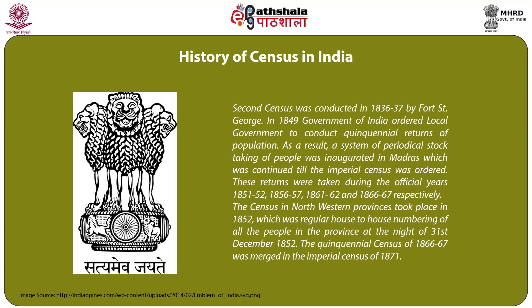In 1849, the Government of India ordered local governments to conduct quinquennial returns of population. As a result, a system of periodical stock-taking of people was inaugurated in Madras, which continued till the imperial census was ordered. These returns were taken during the official years 1851–52, 1856–57, 1861–62, and 1866–67. The census in north-western provinces took place in 1852, which was a regular house-to-house numbering of all people in the province at the night of 31st December 1852. The quinquennial census of 1866–67 was merged with the imperial census of 1871.